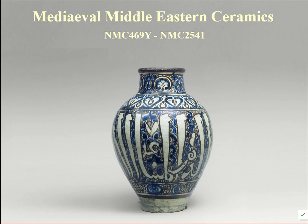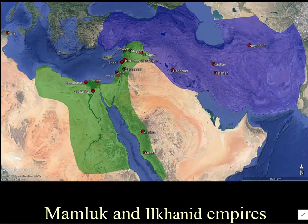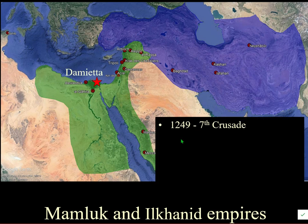This is medieval Middle Eastern ceramics, specifically Mamluk Egypt and Syria. This is a map of the Middle East showing the greatest extent of the Mamluk Empire, contemporary with the Ilkhanids. We're going to cover how this came to look like this, starting with events at the seventh crusade in about 1249.